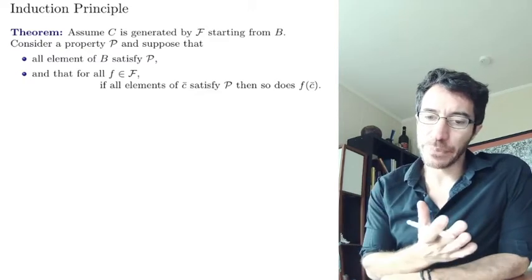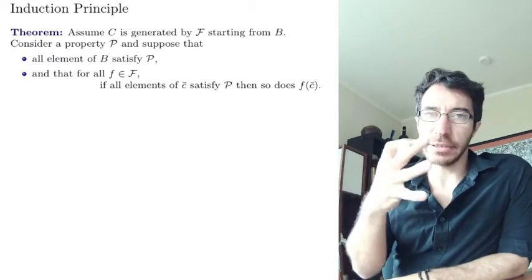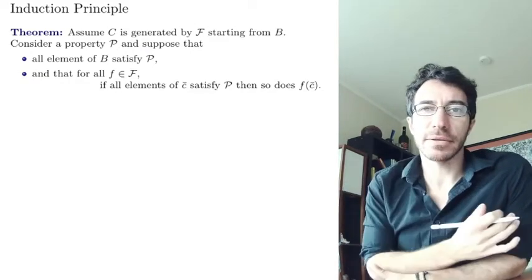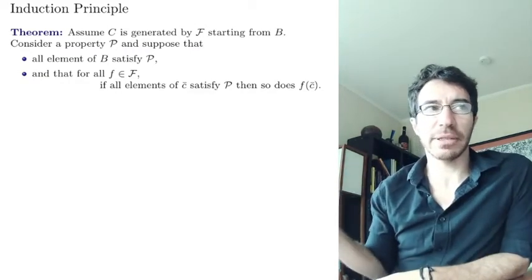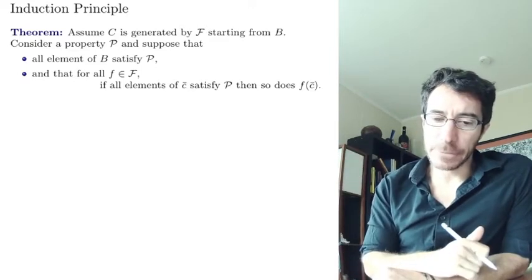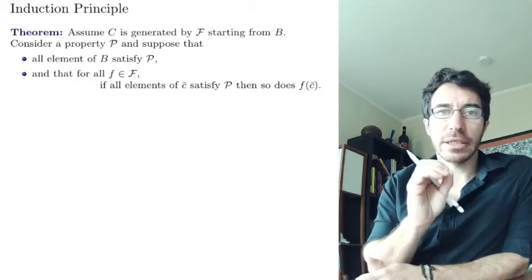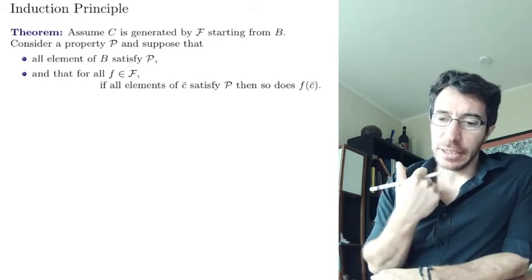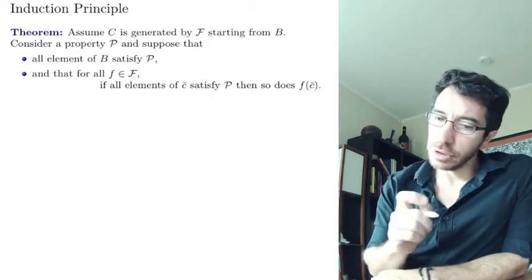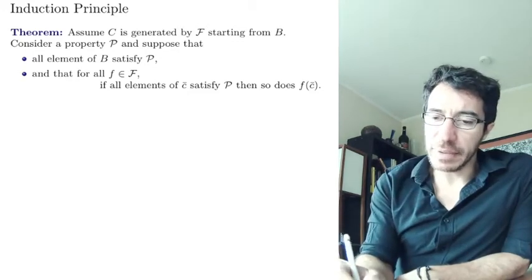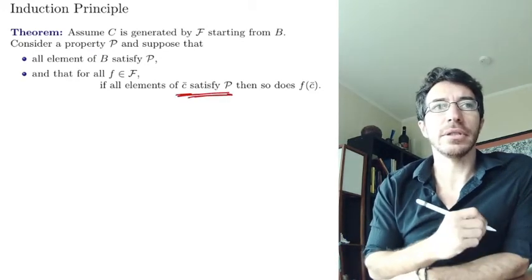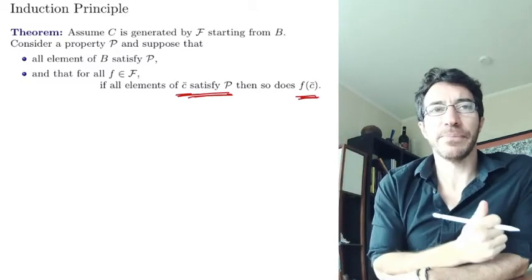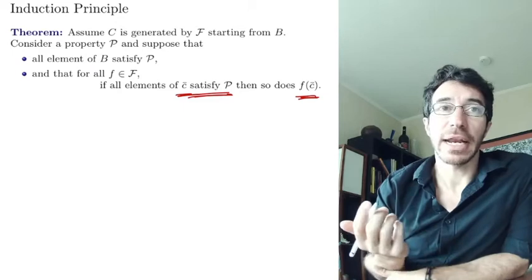You start with a set C generated by a certain family of functions starting from a certain set B, by applying the assumptions. Now consider a property P. This is a property you want to show that every element has. The assumption is: first, all the starting points — all the ones in B — satisfy property P, and whenever you have a tuple of elements that satisfy property P, then if you apply any of the functions in F, the image also satisfies property P.